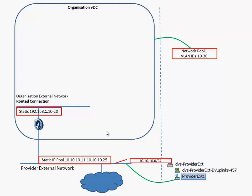In this case we have a vShield Edge device fencing an organization external network from the provider external network — this is step one. This is the network that can be used by your vApps. The internal side of this network is configured with IP address 192.168.1.1, and the external address is configured with an address from the pool, which starts with 10.10.10.11 to 10.10.10.25. The first address handed out automatically to this vShield Edge device is 10.10.10.11.